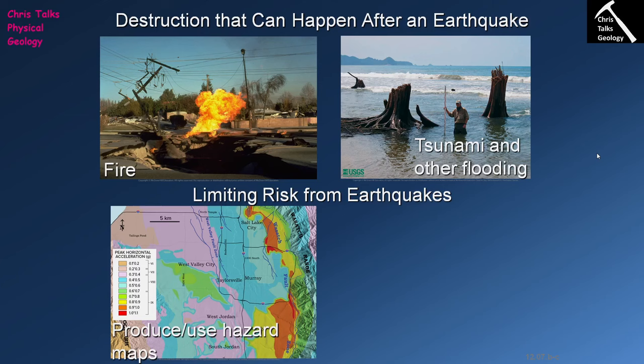So how do we actually limit the risks of earthquakes? Geologists cannot predict when an earthquake is going to occur — no matter how hard we try, we haven't successfully done it. What geologists will do is produce hazard maps. We go to an area, identify all the faults, and try to work out how likely each fault is to move and produce an earthquake. This very often requires the use of historical data.